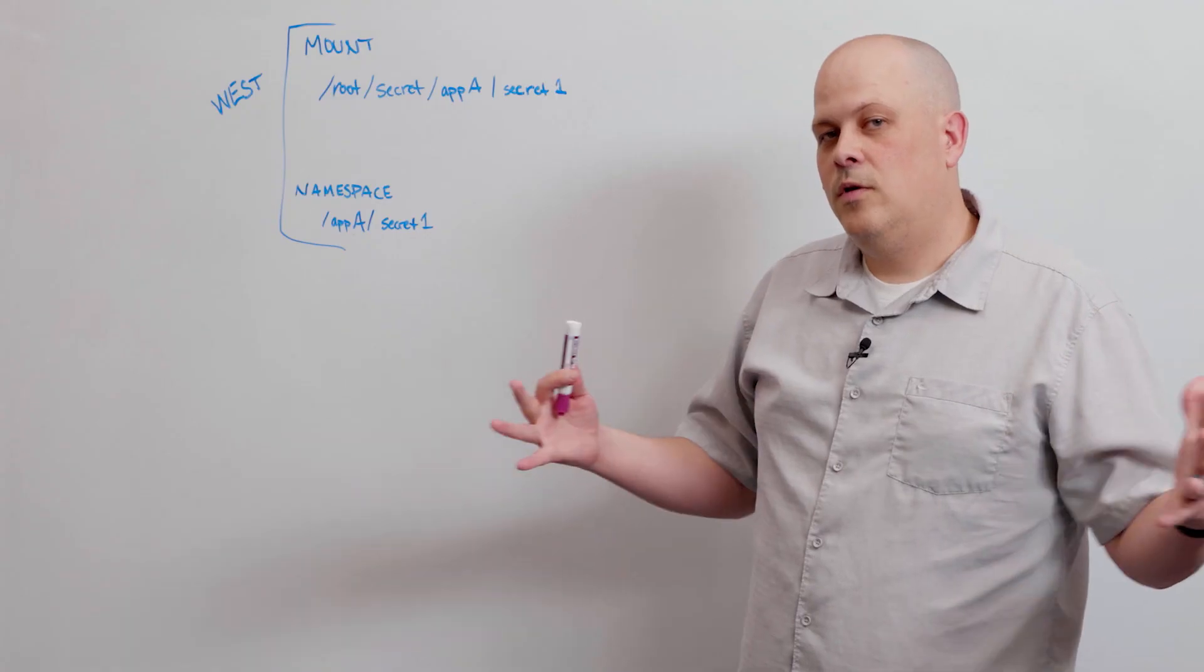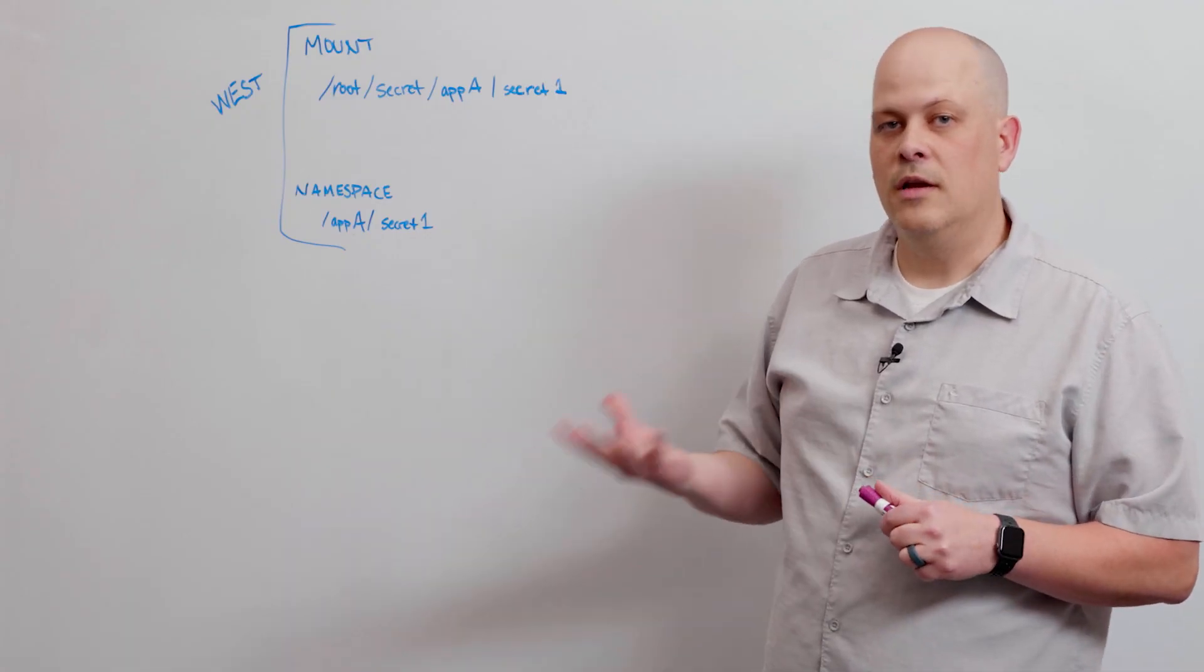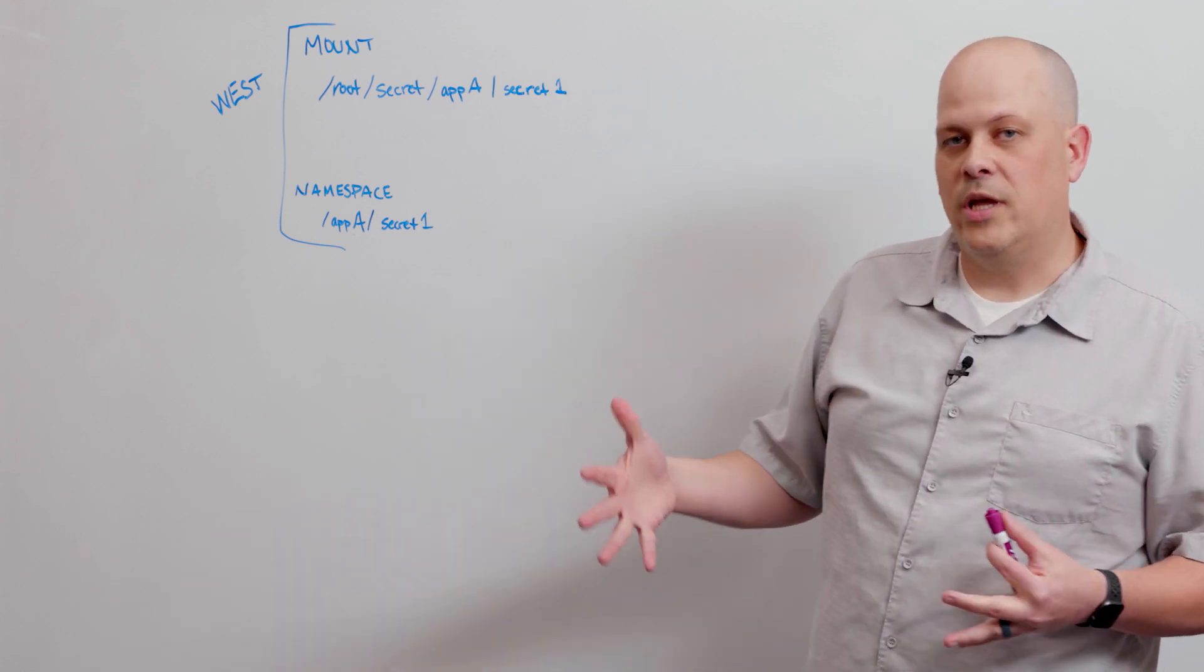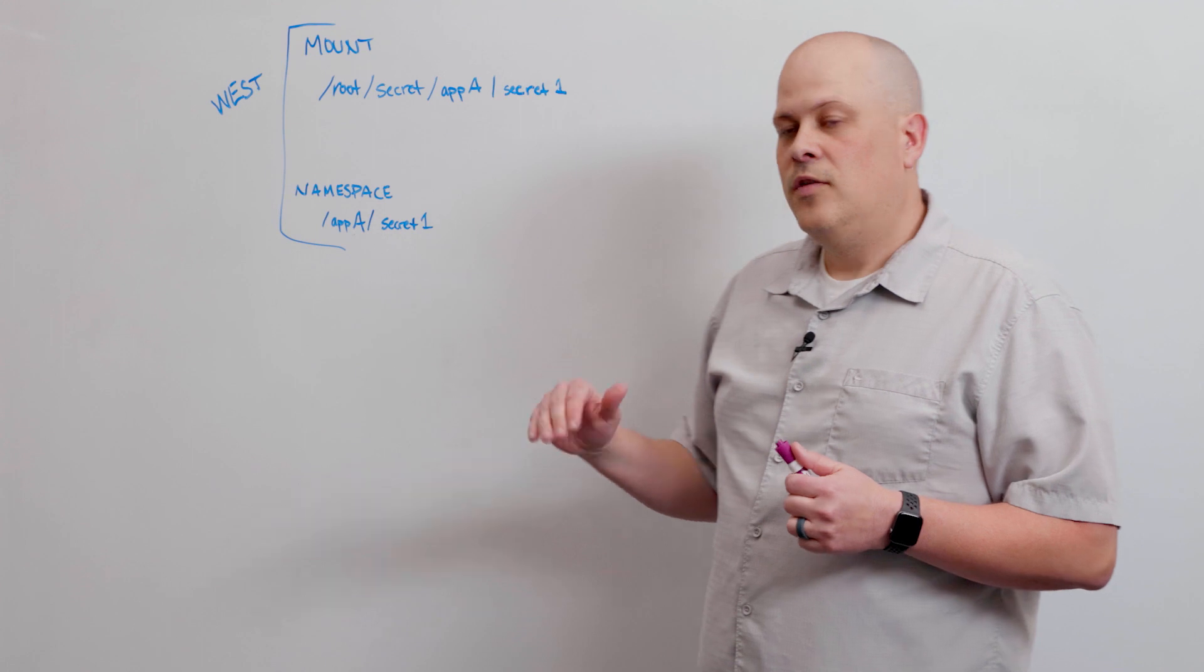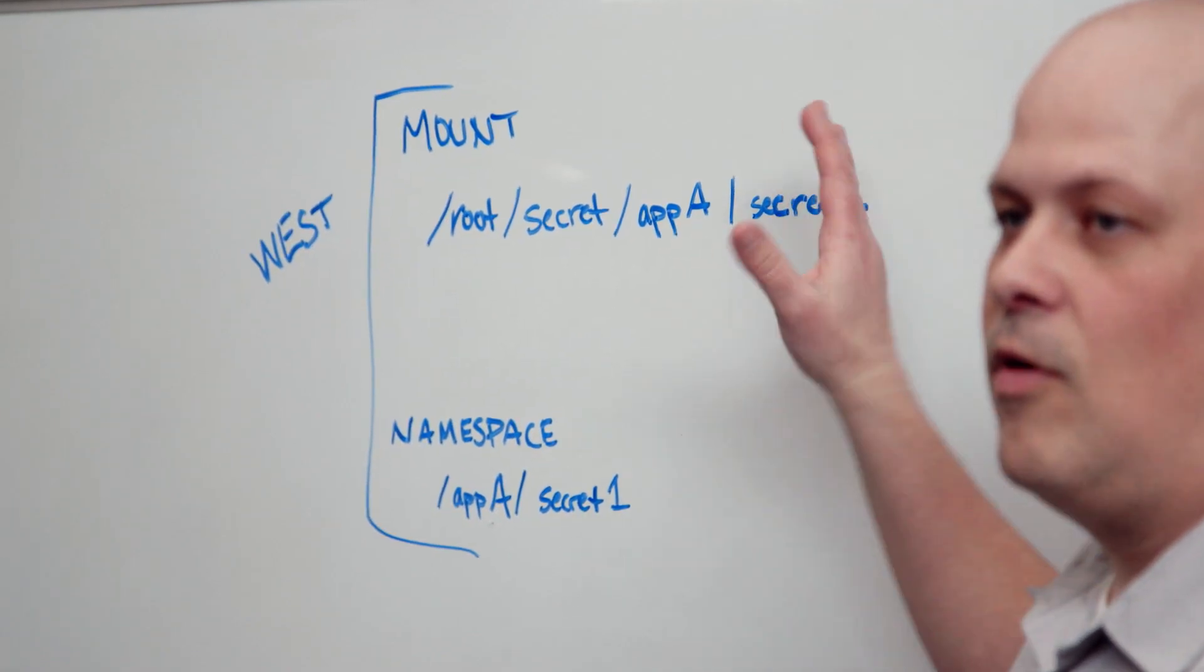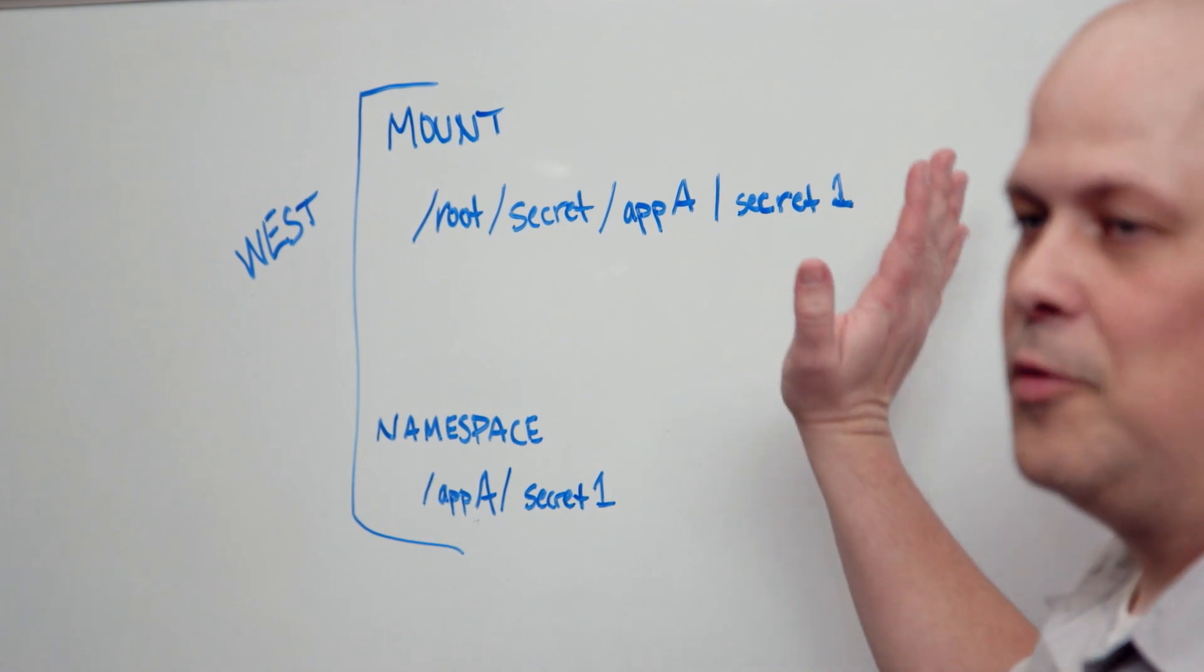In order to explain the concept of filtering, we need to first understand the concepts of mounts and namespaces and replication inside Vault. A mount is the basic structure inside Vault. It's essentially a path where a secret is stored.